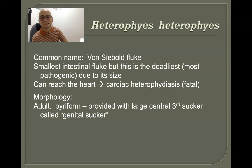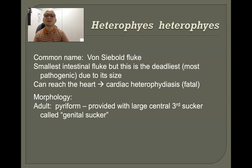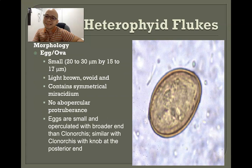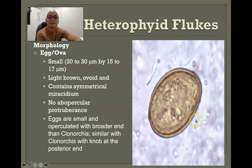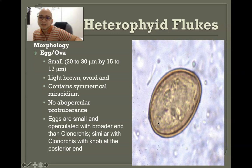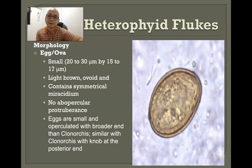The adult is piriform in shape and has a large central third sucker called the genital sucker, in addition to the oral and ventral suckers. The ova are small, measuring only 20 to 30 microns, light brown, ovoid in shape, and contain a symmetrical miracidium. The eggs do not have a visible opercular protuberance unlike other fluke worms.